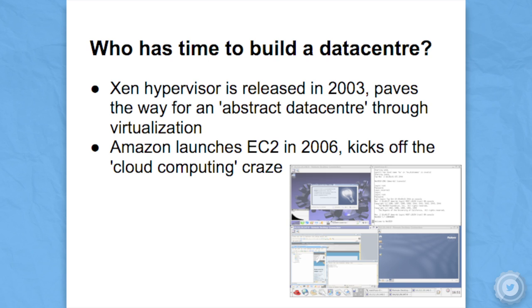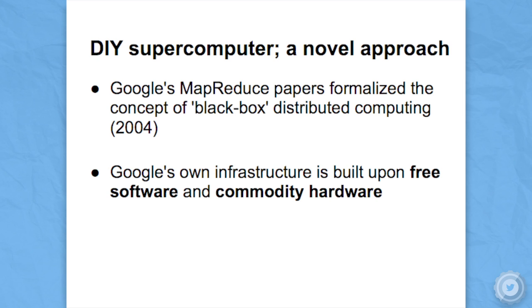Also around this time, in 2004, Google published their MapReduce paper. This paper was really novel because it formalized the concept of MapReduce — taking a large problem and breaking it into two discrete steps that can be easily distributed. Rather than using expensive hardware or buying supercomputers, they built their data centers out of cheap commodity hardware, allowing them to rely on robust software rather than expensive hardware to achieve high availability.